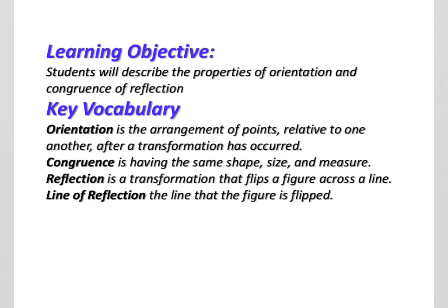We've looked at translation. We found out that when you translate, your figures are still going to be congruent, whether it's the pre-image or the image. The same thing here happens with reflection. Reflection is just a transformation that flips across a line and that line is called a line of reflection. But again, it's going to have the same shape, the same size, and the same measure. Just keep that in mind as we go forward.